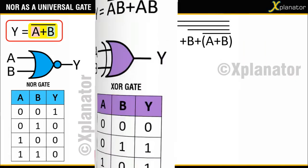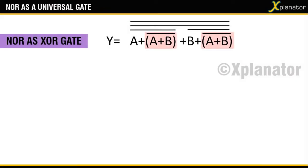For plotting, observe that A plus B the whole bar is common for both terms. So take a NOR gate and give the inputs as A and B. The output is going to be A plus B the whole bar.